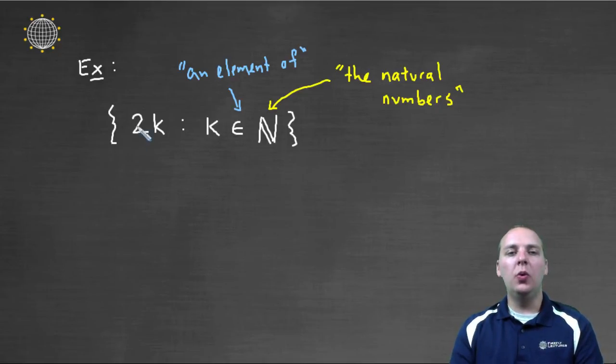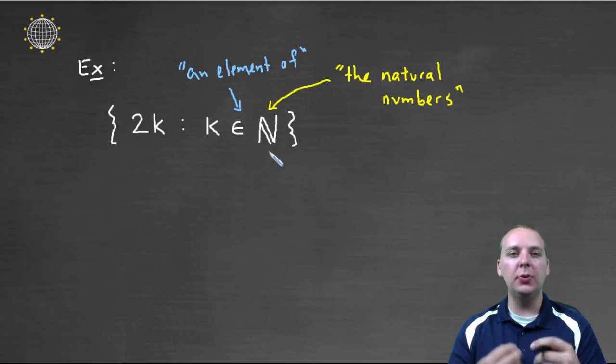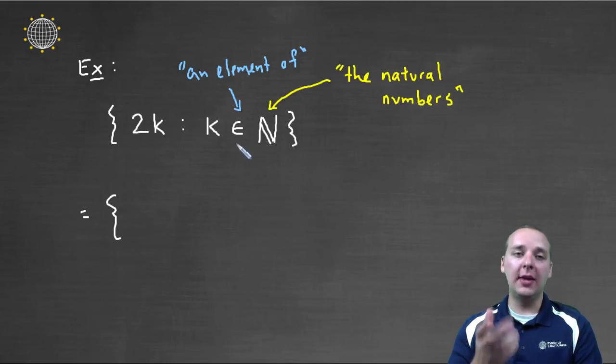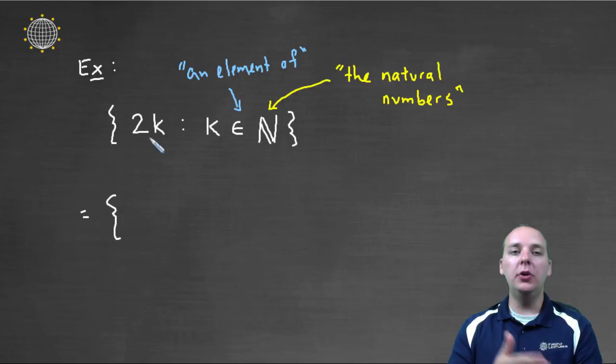And then we want all the elements to K such that K is an element of the natural numbers. So I understand this is getting a little confusing, but just think about it, chew on this for a while. And I think here's what we'd wind up with. So let me read it again. We're looking for all the elements to K such that K is an element of the natural numbers. So K is one, two, three, four, five, six, etcetera.